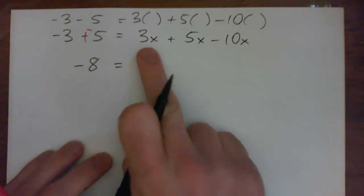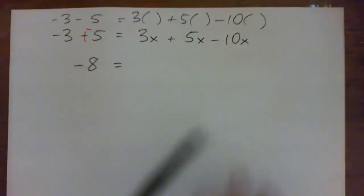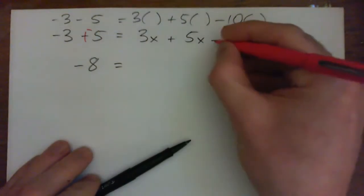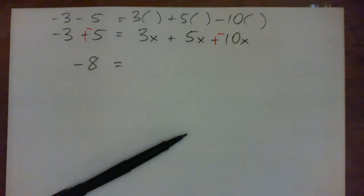And over here we have simply a positive 3x, a positive 5x, and a negative 10x. And if you want, you can take this subtract sign and go blam blam to make it look like 3x plus 5x plus negative 10x. Three good guys, five good guys, and 10 bad guys makes two bad guys all together.